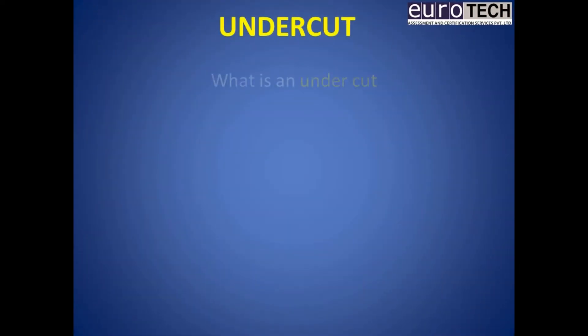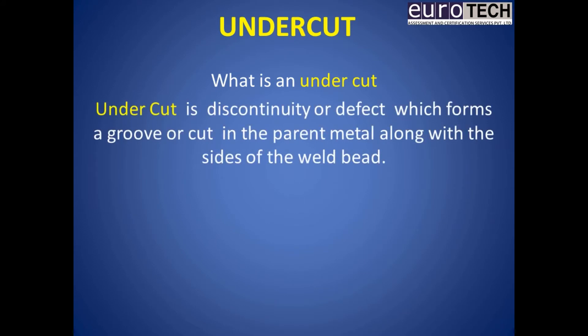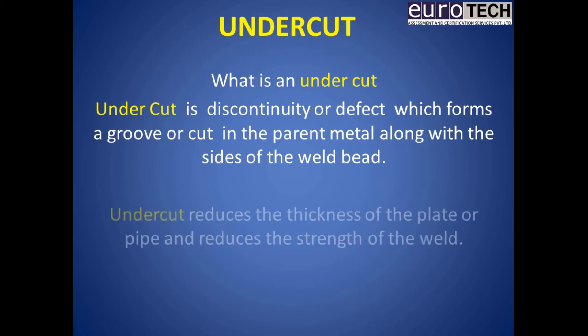Let us discuss what is an undercut. Undercut is a discontinuity or defect which forms a groove or cut in the parent metal along the sides of the weld bead. Undercut reduces the thickness of the plate or pipe and reduces the strength of the weld.